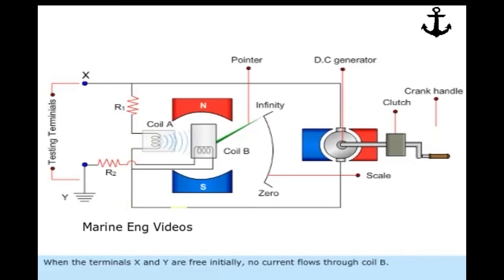When the terminals X and Y are free initially, no current flows through coil B. The torque produced by coil A rotates the moving element to show infinity.